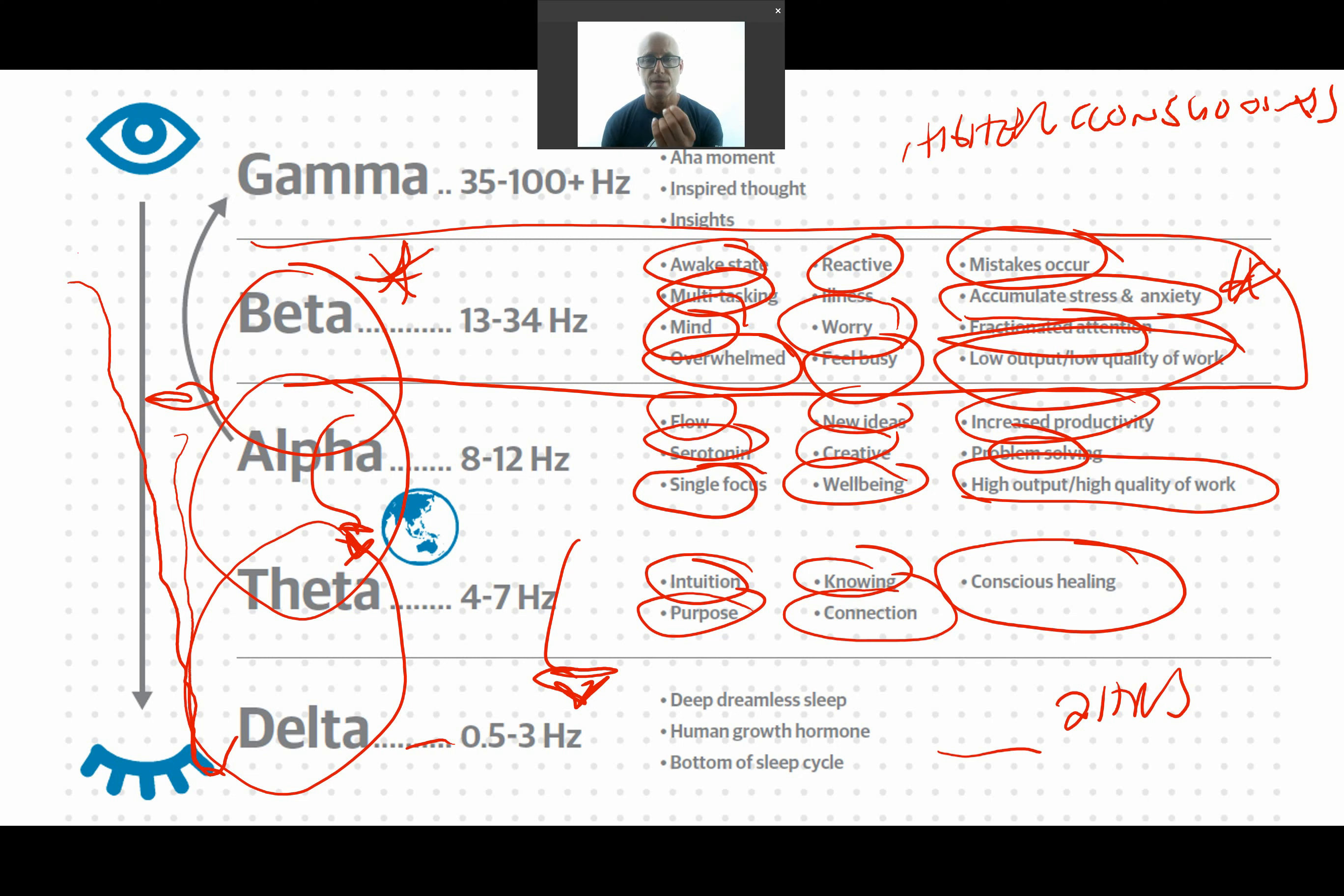You can see here, a lot of the challenges that we face, like stress, overwhelm, depression, anxiety, poor sleep, is because we're stuck here in this beta state.